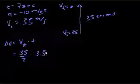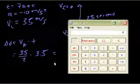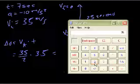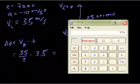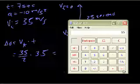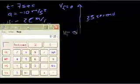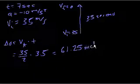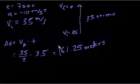And I could use my trusty calculator provided by Windows. 35 divided by 2 times 3.5 is equal to 61.25 meters. Pretty easy.